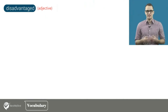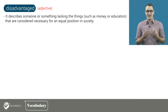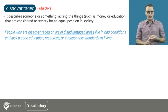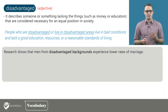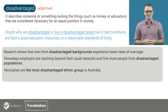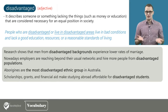Another adjective is disadvantaged, whose meaning and usage are different from disadvantageous. The adjective disadvantaged describes someone or something lacking things such as money or education that are considered necessary for an equal position in society. People who are disadvantaged or live in disadvantaged areas lack good education, resources, or reasonable standards of living. For example: research shows that men from disadvantaged backgrounds experience lower rates of marriage. Employers are reaching beyond their usual networks and hiring more people from disadvantaged populations. Aborigines are the most disadvantaged ethnic group in Australia. Scholarships, grants, and financial aid make studying abroad affordable for disadvantaged students.